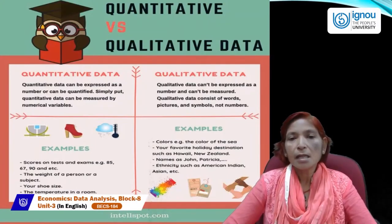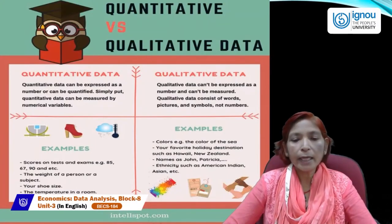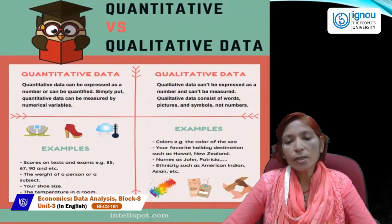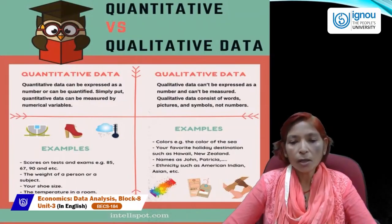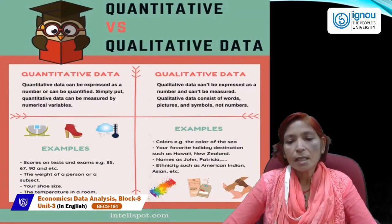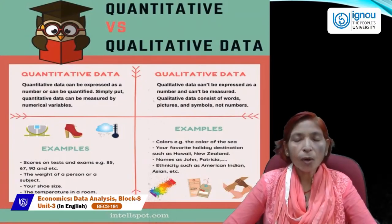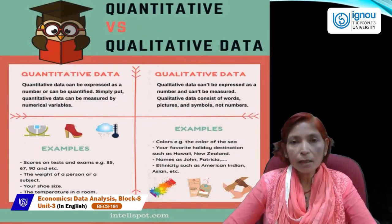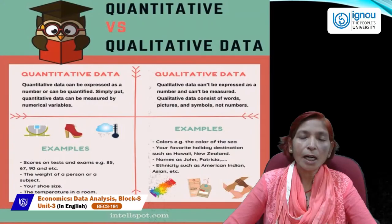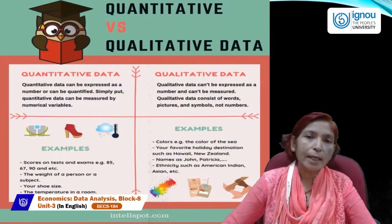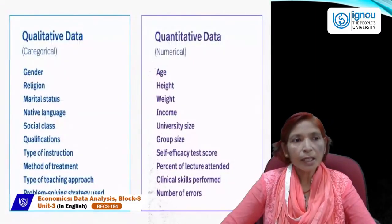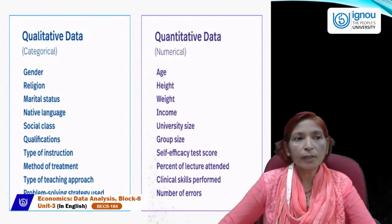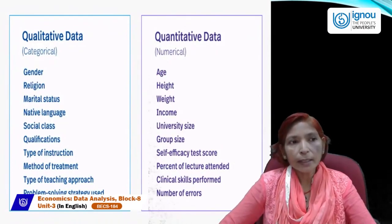Colors of the sea is qualitative data. Your favorite holiday destination — such as Hawaii or New Zealand — names like John or Patricia, ethnicity such as American, Indian, or Asian — all these are examples of qualitative data which cannot be expressed in numerical terms. There are many examples of both quantitative and qualitative data.